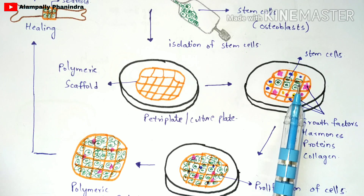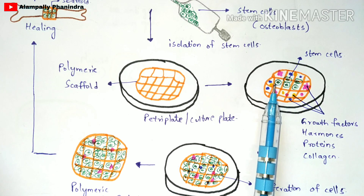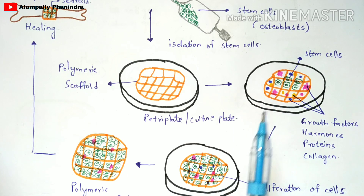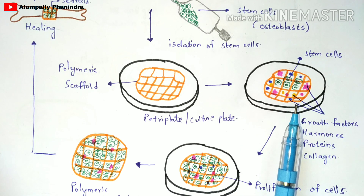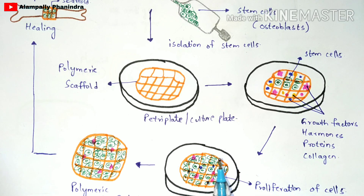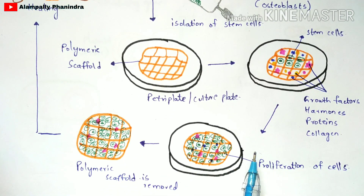Once the nutrients are utilized, the stem cells undergo proliferation — rapid cell division. Proliferation increases the number of stem cells: the cells gain energy from the nutrient medium, undergo cell division, and their quantity increases significantly.